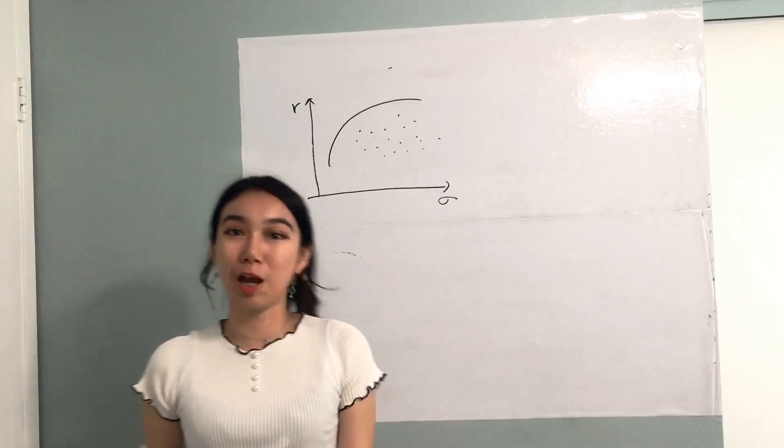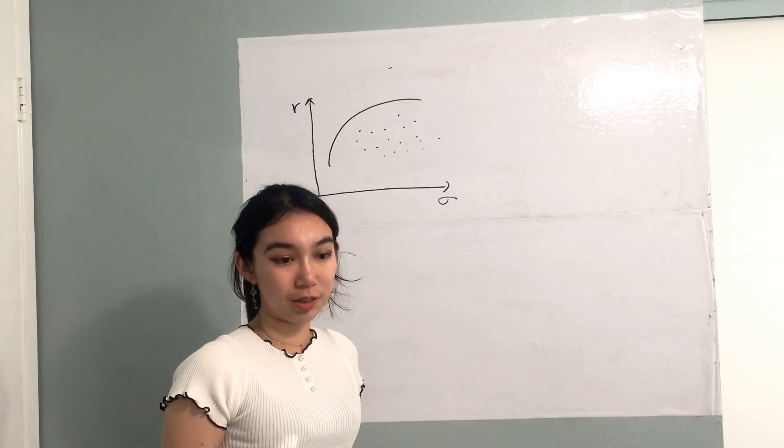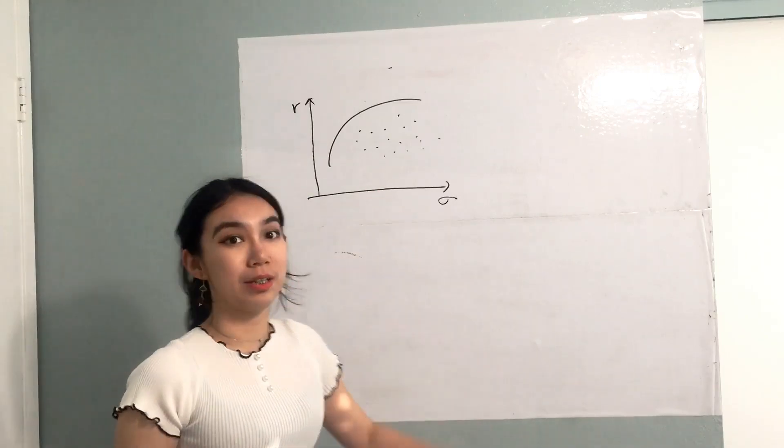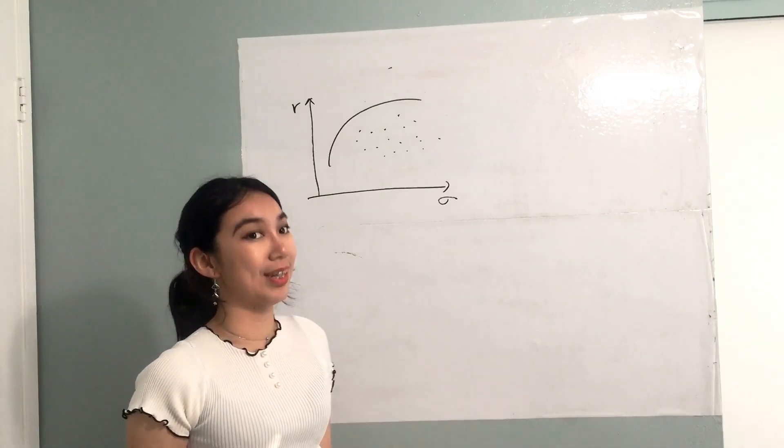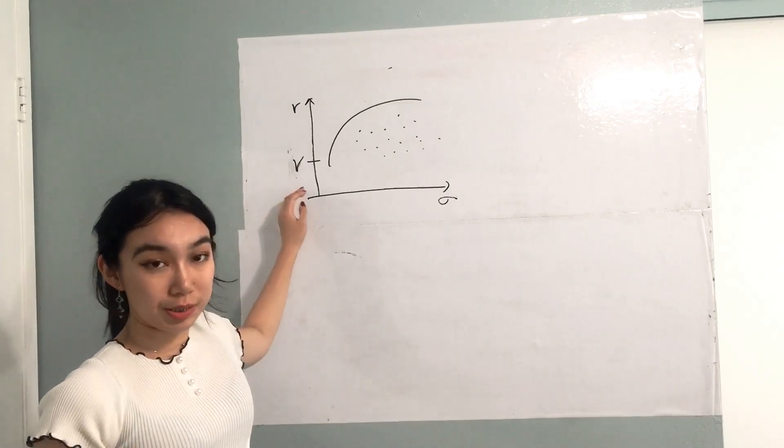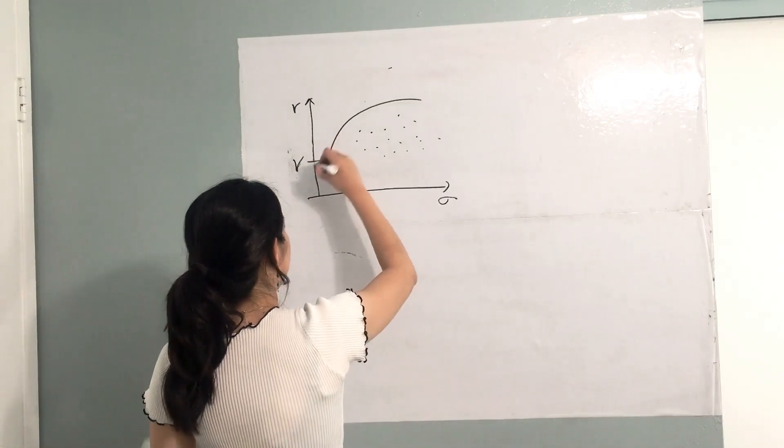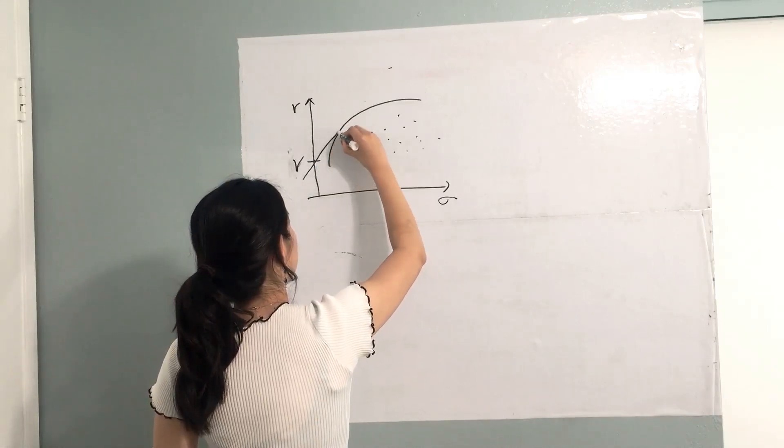What is the capital market line? After talking about the efficient frontier, one thing we can notice is that now we only invested in the risky asset. In reality, our opportunity set can even be larger when we are having the risk-free asset. So now we can draw a tangent line from the risk-free asset point to the efficient frontier.